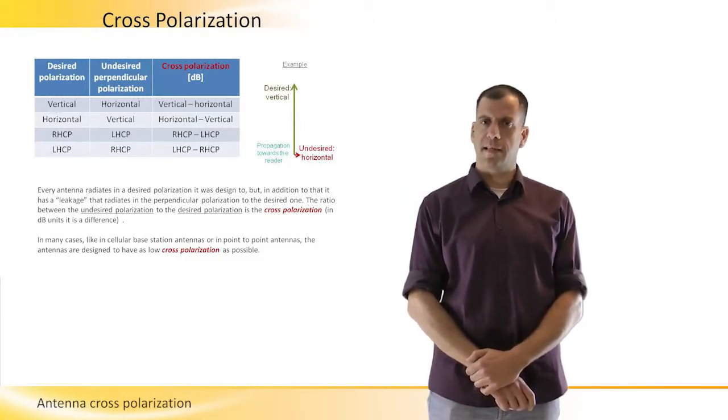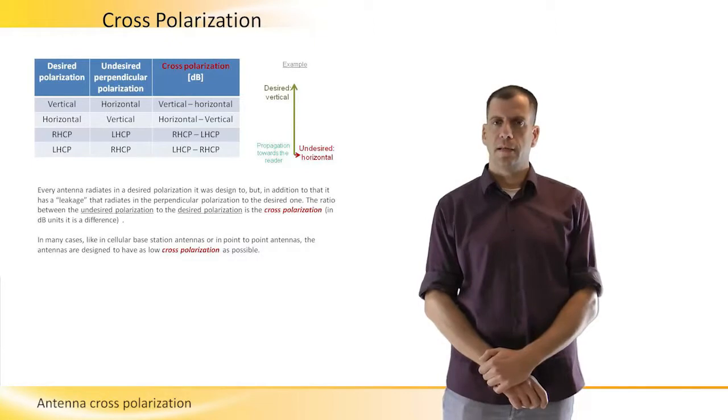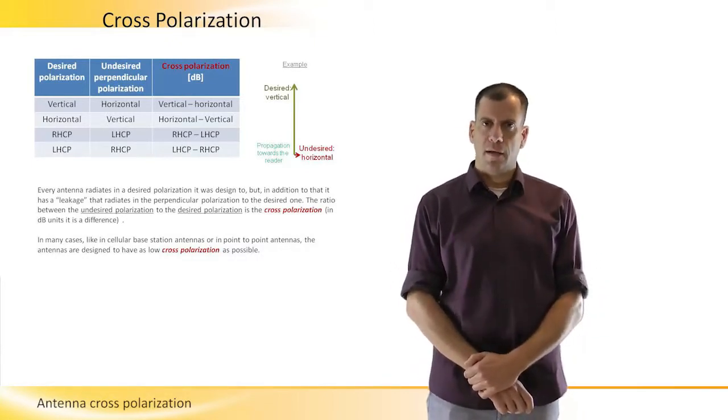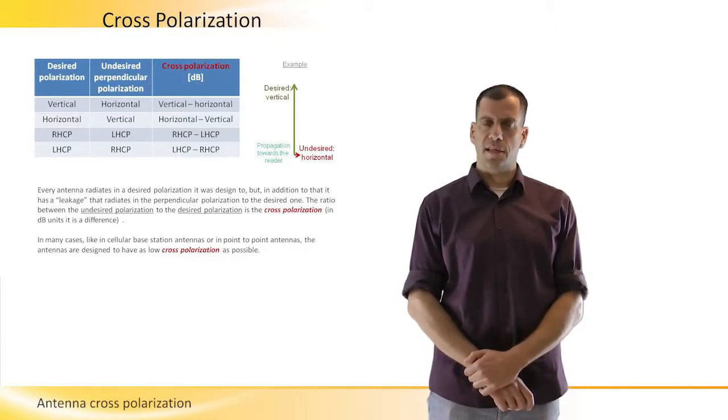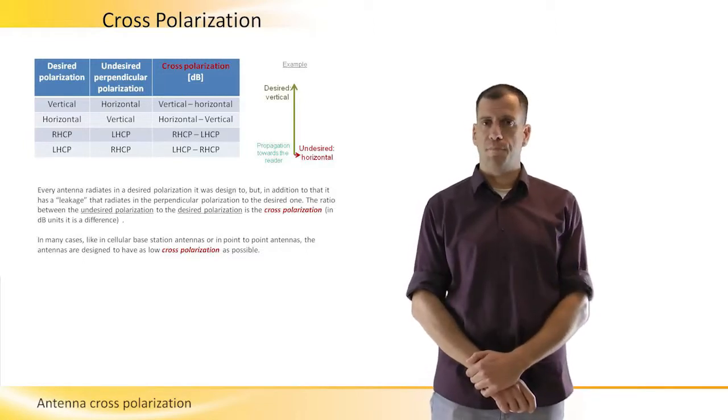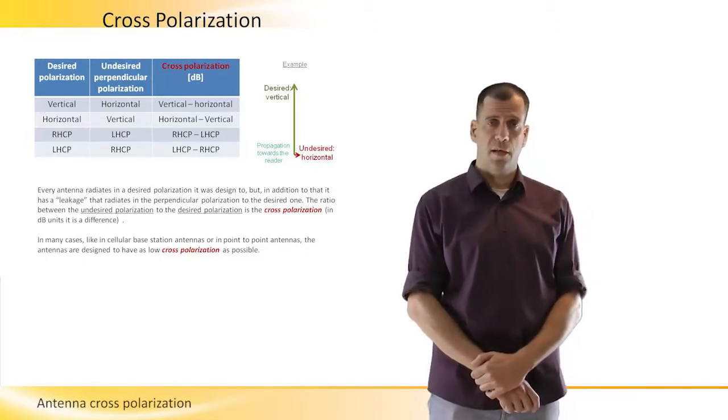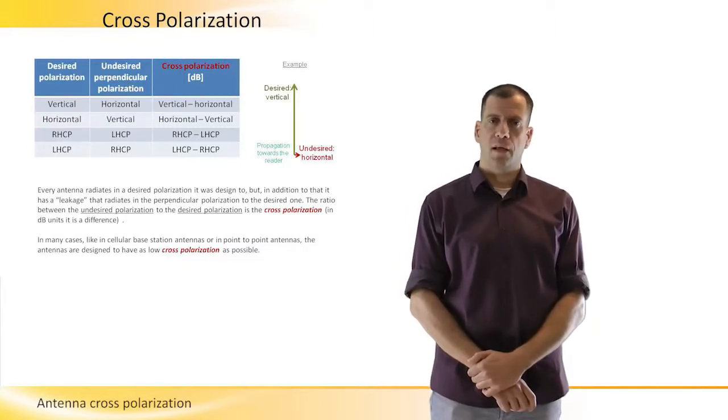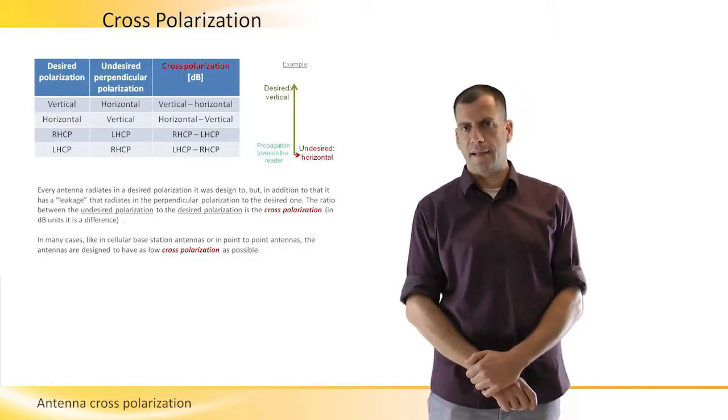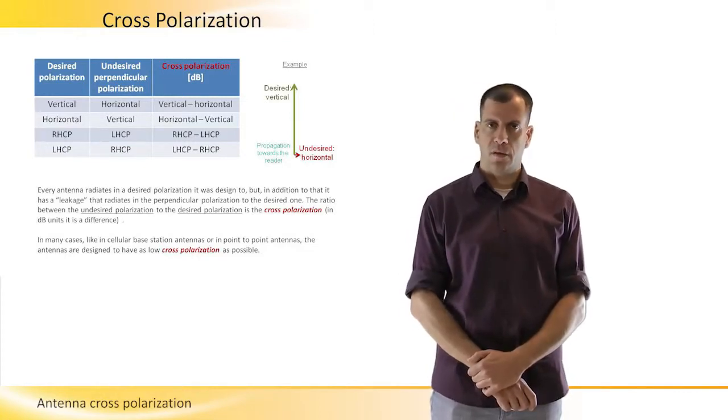The antenna will transfer both the energy of radio one and radio two on the same antenna, in the same link, in the same frequency. We actually double the capacity of the link only by using both of the polarization with very good cross-polarization or very low cross-polarization. If we had bad cross-polarization in this case, then every radio would have interfered the other radio link and we wouldn't want that to happen.